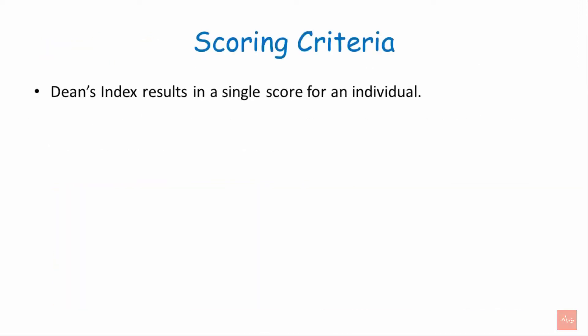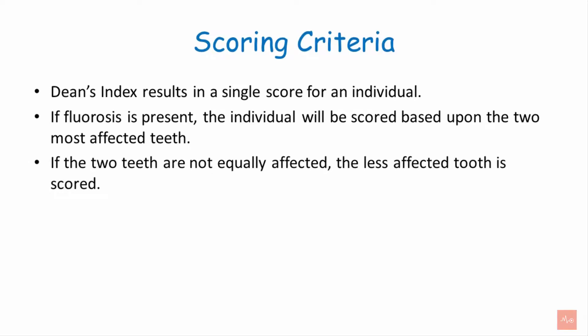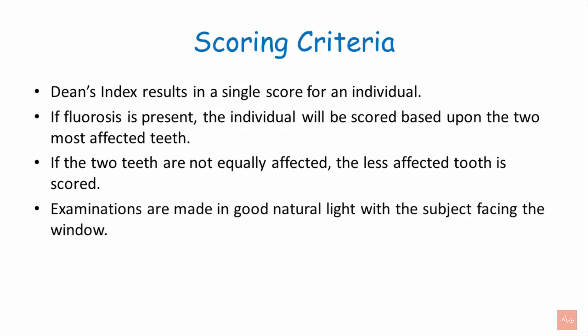Regarding the scoring criteria, Dean's index results in a single score for an individual ranging from 0 to 4. If fluorosis is present, the individual is scored based upon the two most affected teeth. If those two teeth are not equally affected, the less affected tooth is scored — for example, if one tooth scores 4 and another scores 3, the patient is assigned a score of 3. Examinations are made in good natural light with the subject facing the window, using only a mouth mirror and probe.